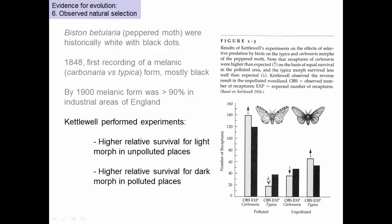So it looks like the carbonaria are surviving better and the typica are not surviving as well, because he can't recapture them. Then he went to unpolluted areas where the trees are still light colored and did the same thing. He released roughly equal numbers of each and was able to recapture a higher proportion of the typica — the white ones — than the black ones. By releasing and recapturing, he's showing that their survival differs in these different regions, because it's the ones eaten by birds that he fails to recapture. He demonstrated higher survival for the light morph in unpolluted areas and higher survival for the dark morph in polluted areas — so it's not like pollution was just turning them all black. There seemed to be differences in survival causing them to evolve to become black where that was advantageous.